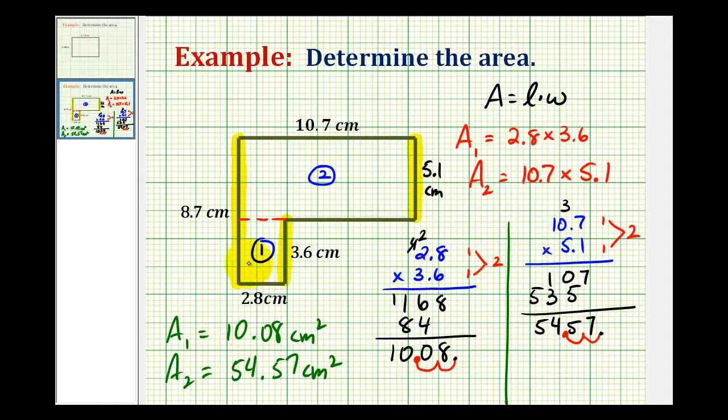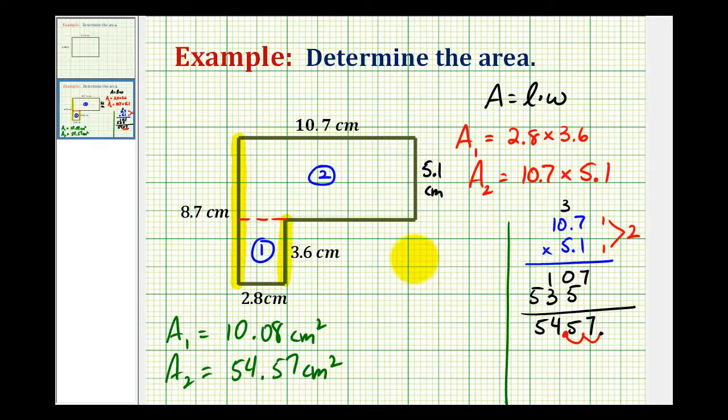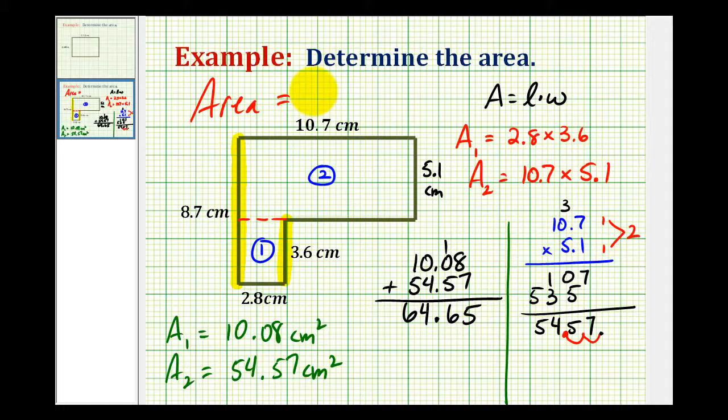But our goal is to determine the area of this entire L-shaped polygon. So we need to determine the sum of these two. So we have 10.08 plus 54.57. We have 15, carry the 1. This would be 6. Make sure we bring down the decimal. We have 4 and 6. So the area of this L-shaped polygon is equal to 64.65 square centimeters.